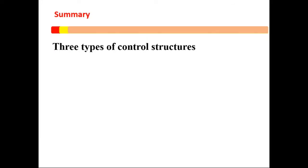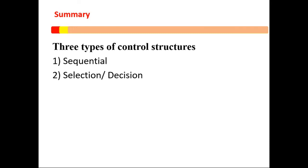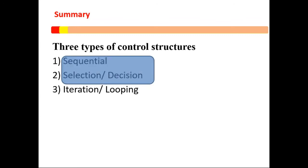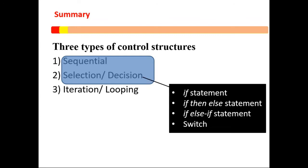In summary, we have looked at three types of control structures: sequential, selection or decision, and iteration or looping. For today's lesson we concentrated on the first two — sequential and selection. Under selection we looked at the if statement, if-then-else statement, if-else-if statement, and lastly the switch statement. In our next class we'll continue with iteration or looping. Thank you.